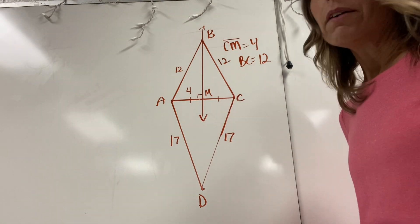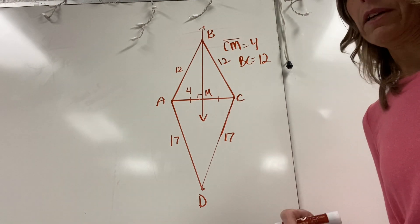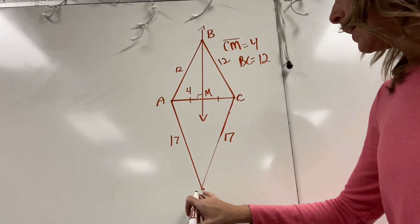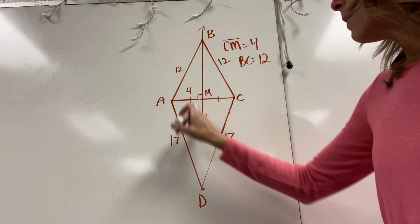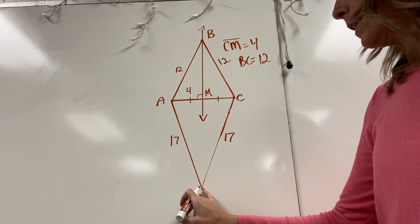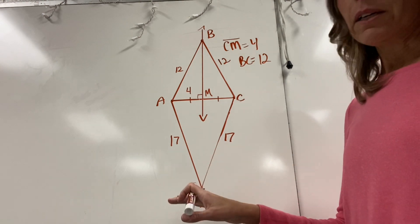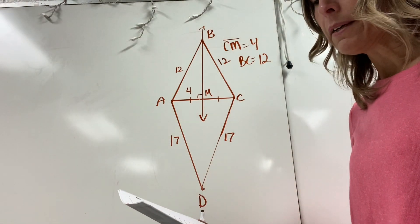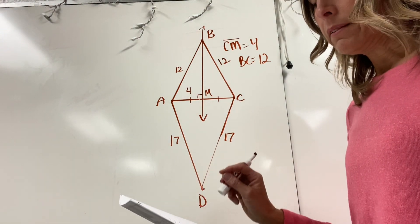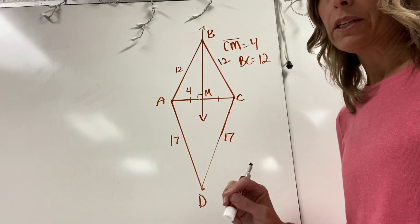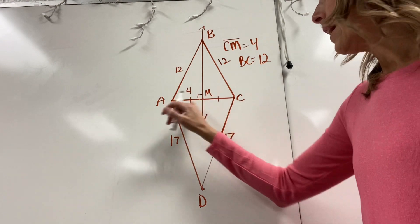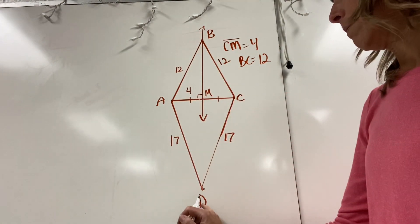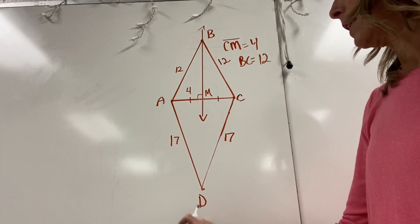That is the converse of your perpendicular bisector theorem — it says if a point is equidistant from the endpoints of a segment, then it must lie on the perpendicular bisector of that segment. So what I can conclude about point D is that it lies on the perpendicular bisector of AC — it must lie on line BM, because BM is the perpendicular bisector of AC.